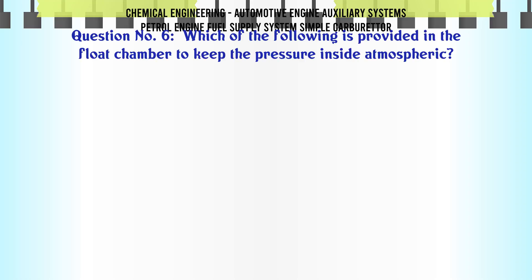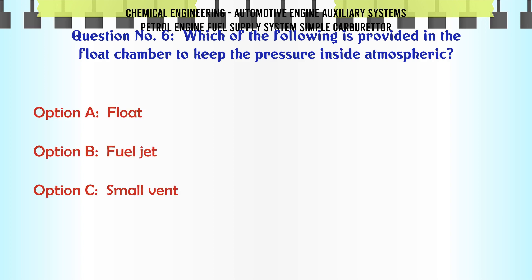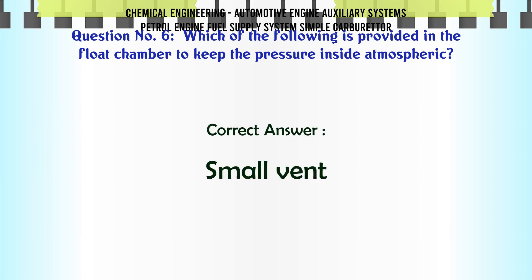Which of the following is provided in the float chamber to keep the pressure inside atmospheric? A. Float. B. Fuel jet. C. Small vent. D. Throttle valve. The correct answer is small vent.